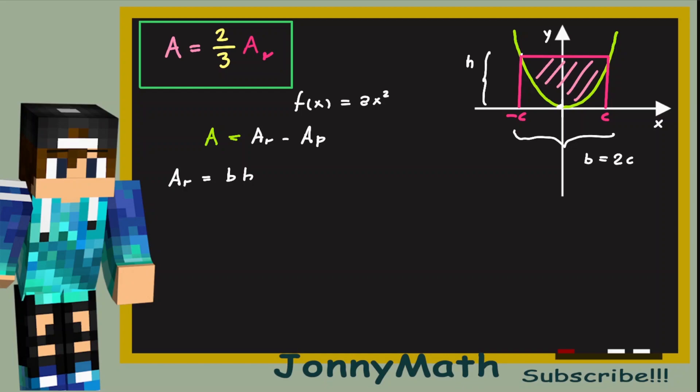And the height is just the value that the function has at the point minus c. In other words, h equals f of c. So we can substitute the height and the base into our formula. And we get the base, 2c, times the height, ac squared. And this product is just 2ac cubed.